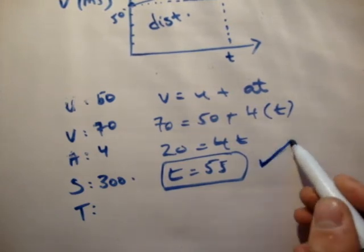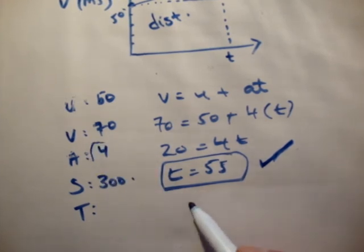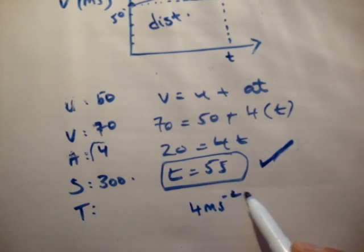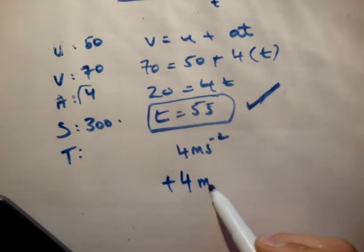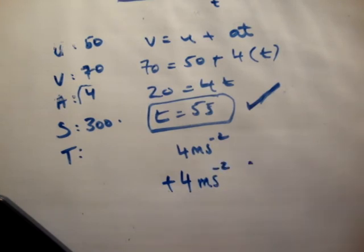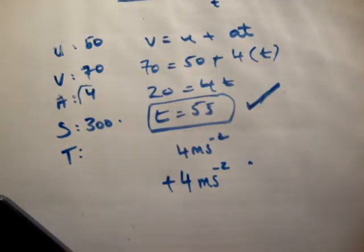Now there's a point to note here and this is very important. We said the acceleration was equal to 4 meters per second squared. To be precise we said it's equal to plus 4 meters per second squared. How do we know that? Because we were accelerating. The speed at which you started is less than the speed at which you finished. So you're accelerating.